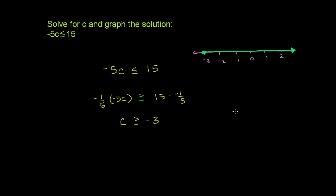And you can verify that it works in the original inequality. Pick something that should work. Well, 0 should work. 0 is one of the numbers that we filled in. And negative 5 times 0 is 0, which is less than or equal to 15. It's less than 15.